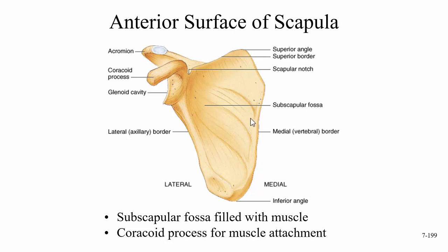Now the anterior or front view of the scapula: on a full skeleton you'd have to peek through the ribs to see this, because this area is right up against the rib cage. What we see here is another fossa — the subscapular fossa — which is filled with the subscapularis muscle. That's the third of the four rotator cuff muscles.